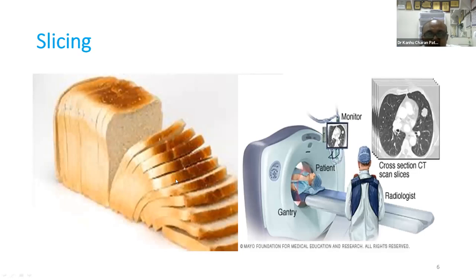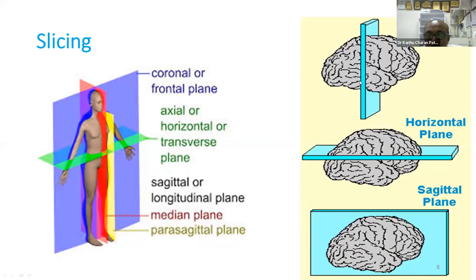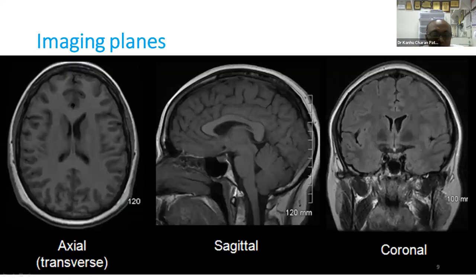The basic concepts we need before interpreting images include slicing, windowing, CT number, measure of density, contrast, FOV, and bore. Any imaging body slice is known as slicing. A side-to-side view is the sagittal view, anterior-posterior view is the coronal view, and top-to-bottom view is the axial view.